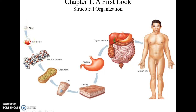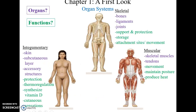Structural organization means we are organized structurally on many different levels, going from the smallest — the atom — to molecules, macromolecules, organelles found inside cells, cells coming together to form tissues, tissues forming organs, organ systems, and then the organism. We have 11 body systems.